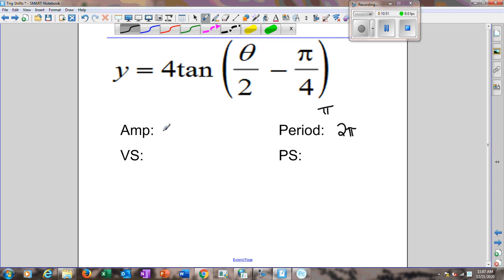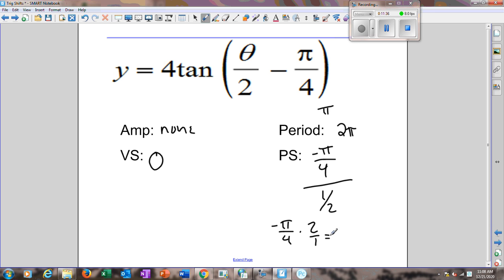So for tangent we'll put amplitude as none. I will show you what the 4 does to the graph, but it doesn't create this function that's flowing up and down by the same amount each time. Our vertical shift in this case would be 0 because there's no number behind all of this. In our phase shift now we would do the negative π over 4 which means it moves to the right. And then just like before we would divide it by this number here which is 1 half. So I'm doing negative π over 4 divided by 1 half which means I flip the bottom one and multiply so it's negative π over 4 times 2 over 1, so that's negative π over 2 for our phase shift.